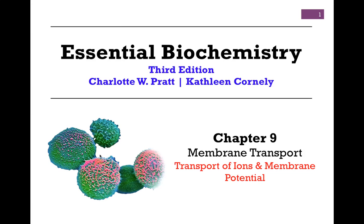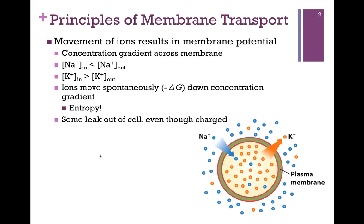We're beginning our studies of Chapter 9 on membrane transport. In this lesson we want to look at the transport of ions and how that relates to membrane potential. There is a membrane potential that is a difference in charge across the membrane. This is because we have established a concentration gradient of ions. The membrane is highly hydrophobic and pretty much impermeable to the movement of anything that's charged, even something as small as a sodium or potassium ion.